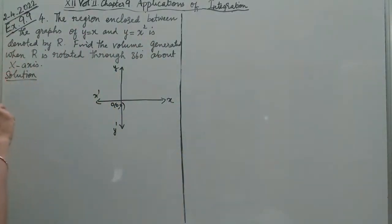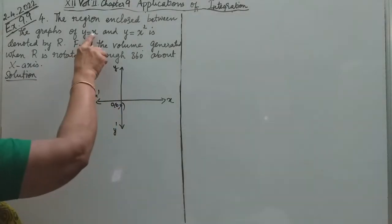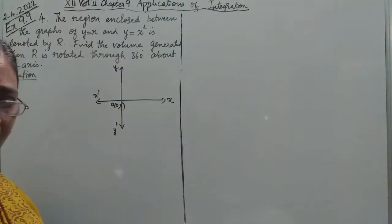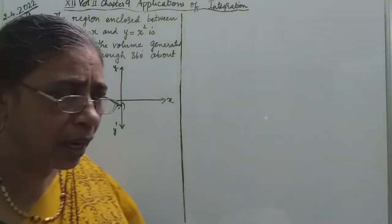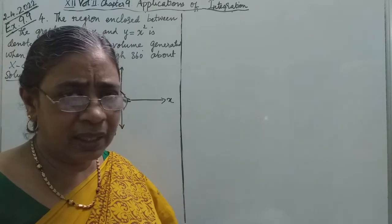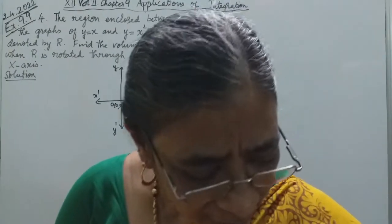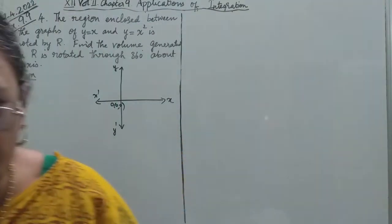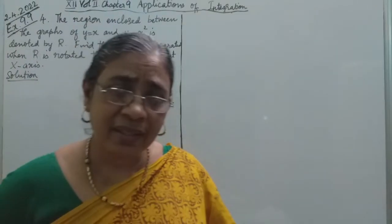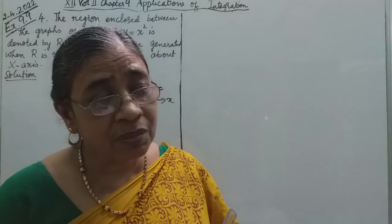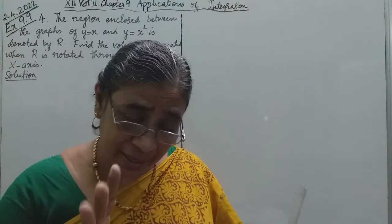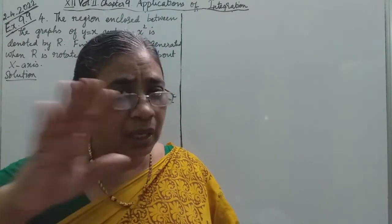The two curves are: y equals x, which is a straight line making 45 degrees from the positive x-axis, passing through points (0,0), (1,1), (2,2), (3,3). The region is enclosed between the two curves, with the x-axis and y-axis as boundaries.